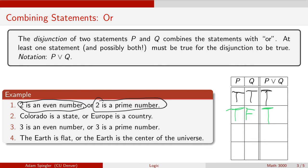In sentence three, 'three is an even number' is false, and 'three is a prime number' is true. Since one of those statements is true, altogether this disjunction is true.